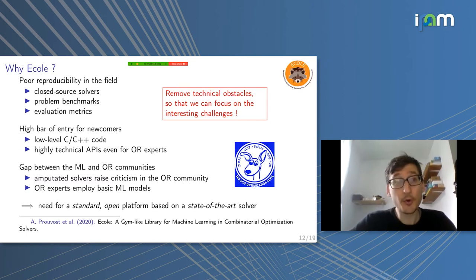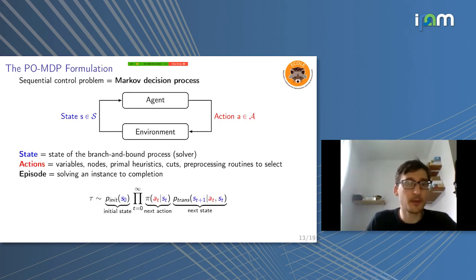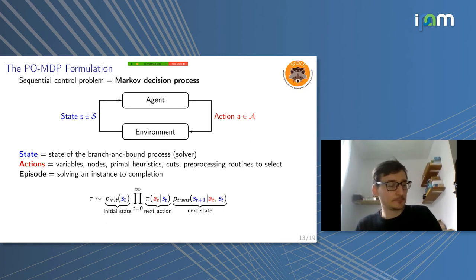So the whole point of Ecole is to basically remove all the technical obstacles for machine learning for combinatorial optimization practitioners, so that we can focus on the actually interesting challenges, like which models are best suited, which tasks are interesting, like does it work, let's just run some benchmarks. We don't want to spend months just debugging code.